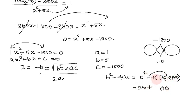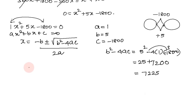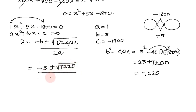Computing the discriminant: b squared minus 4ac equals 5 squared minus 4 times 1 times minus 1800, which equals 25 plus 7200, giving us 7225.